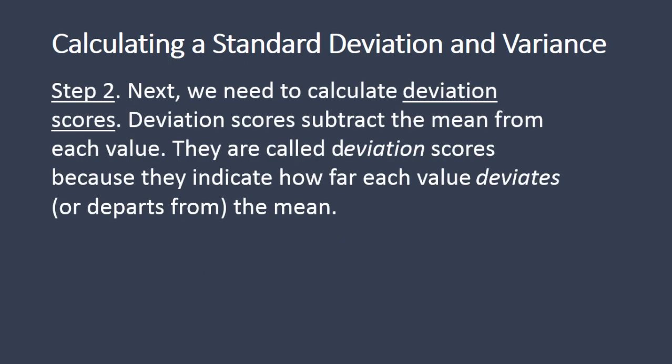Next we need to calculate deviation scores. Deviation scores subtract the mean from each value. They're called deviation scores because they indicate how far each value deviates or departs from the mean — in other words, how far is each value away from the mean? That's what a deviation score measures.